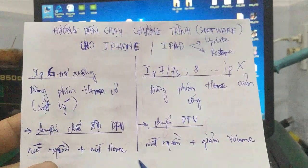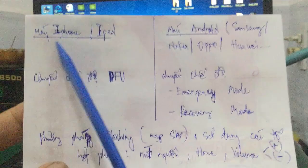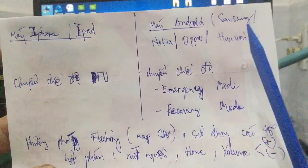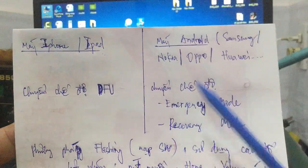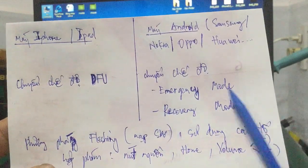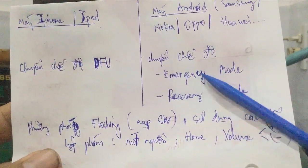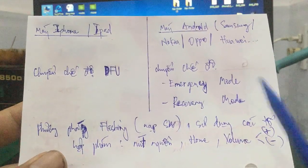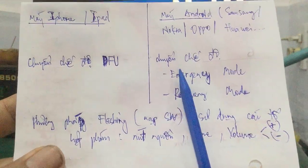Chế độ DFU dành cho iPhone, iPad. Còn các dòng máy Android như Samsung, Nokia, Huawei, Xiaomi, Sony Xperia, LG thì không gọi là chế độ DFU mà có 2 chế độ: Emergency Mode và Recovery Mode. Emergency Mode là chế độ Download khẩn cấp, Recovery Mode là chế độ phục hồi lại. Hai chế độ này tương đương nhau về phương pháp làm, chỉ khác tên gọi.